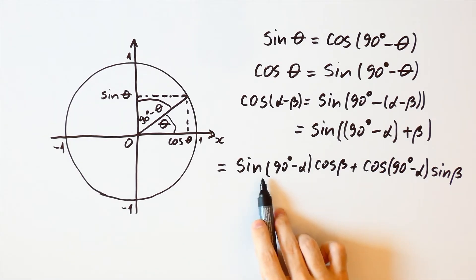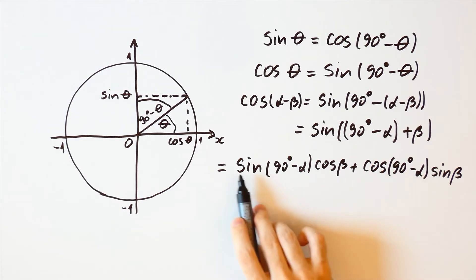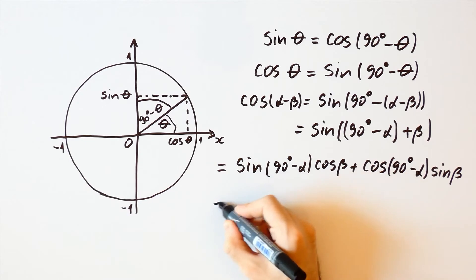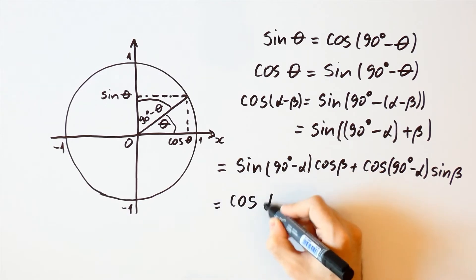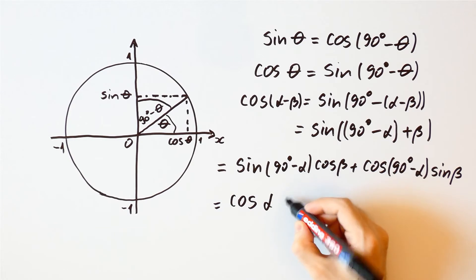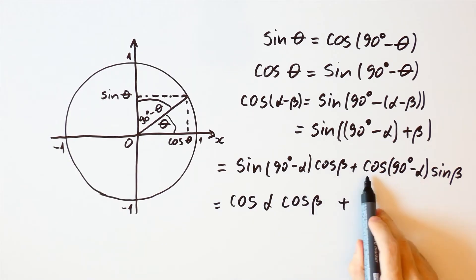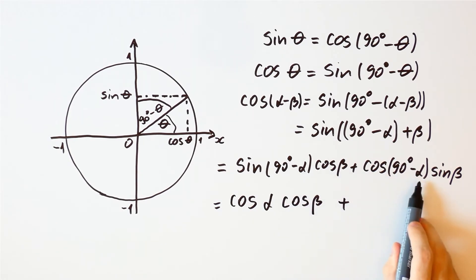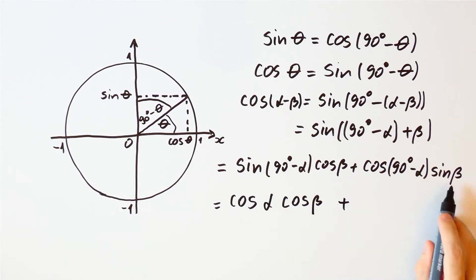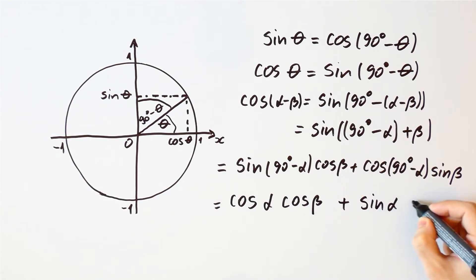And what are the sine and the cosine of 90 degrees minus alpha? Well, the sine of 90 degrees minus alpha is equal to the cosine of alpha, so this is equal to the cosine of alpha times the cosine of beta. And the cosine of 90 degrees minus alpha is equal to the sine of alpha, so this is equal to the sine of alpha times the sine of beta.